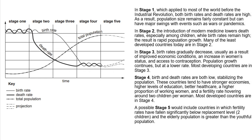This is the demographic transition model, from stage one here to stage five. If you look at the keys, this represents the birth rate, and we have death rate and total population. To calculate natural population growth, it will be birth rate minus the death rate of that particular region. Total population growth is when you're also bringing in immigration and emigration. You can check lesson one and lesson two for that.